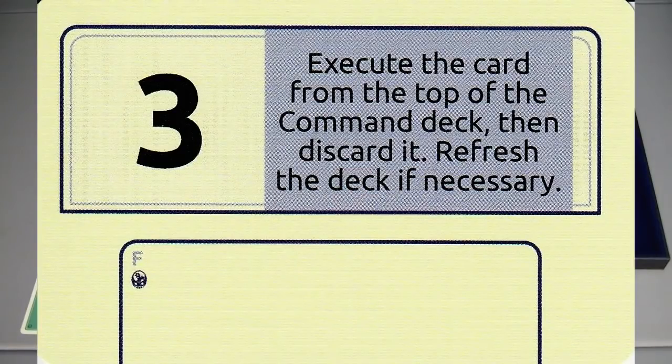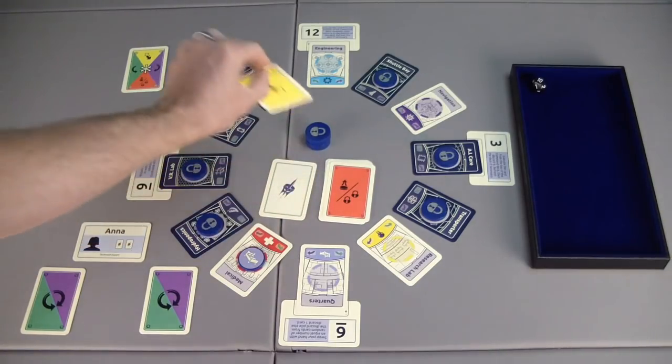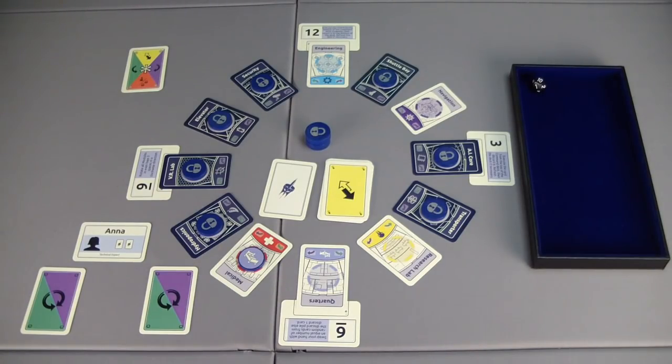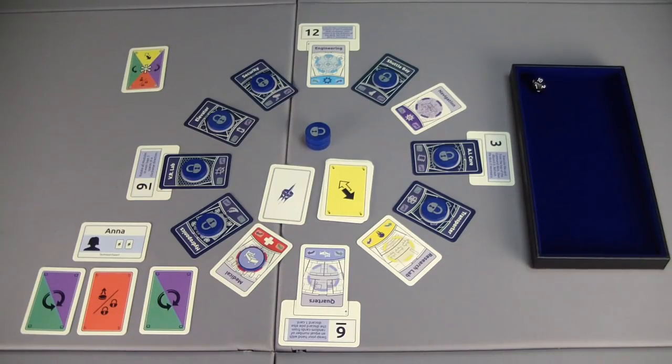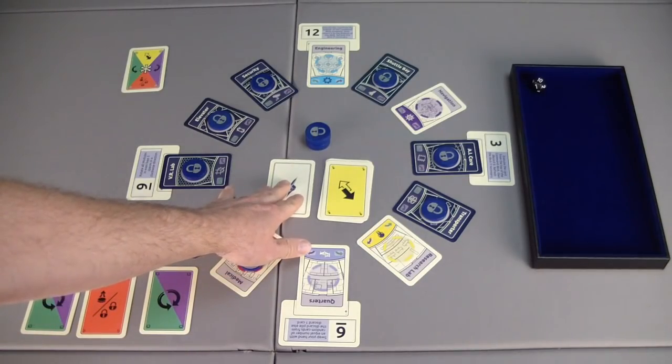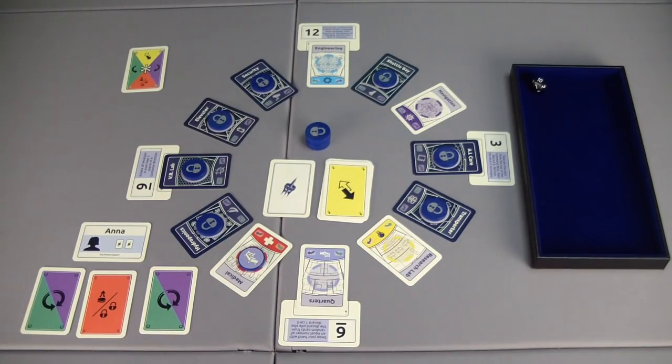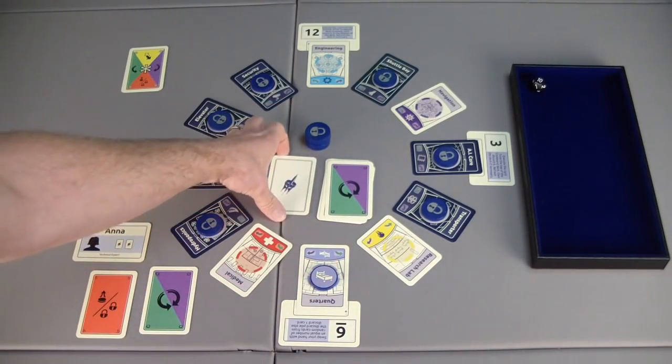On card number three, it says to execute the card from the top of the command deck. Then discard it. Refresh the deck if necessary. So whatever card this is, we have to execute it. It is going to be a swap. That is unfortunate and fortunate, I guess, because we cannot swap because there's only one module out there and you can't swap with an empty space. So we lose that swap. And now we have a deploy lock card. And I think that's the last one. I think so. Yes, because we haven't seen the single rotate one direction card yet. So I will rotate one anti-clockwise to put the quarters in place.